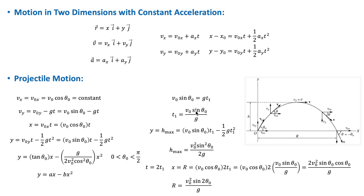The time to reach maximum height is t₁ = v₀ sin θ₀ / g. Substituting t₁ into the y displacement equation gives the maximum height: h_max = v₀² sin²θ₀ / (2g).